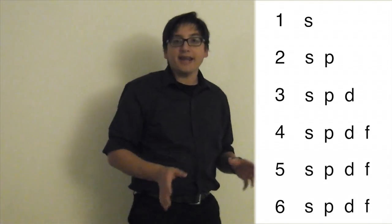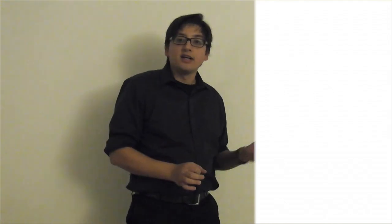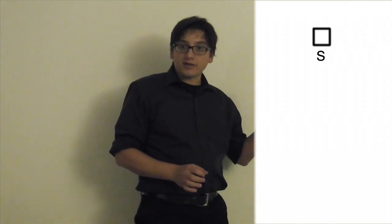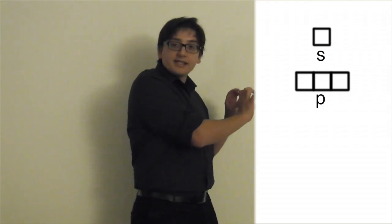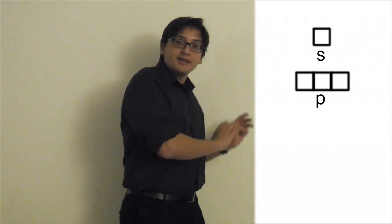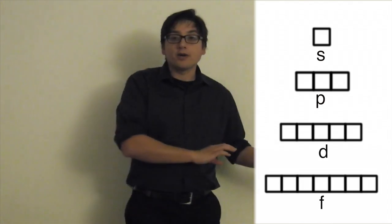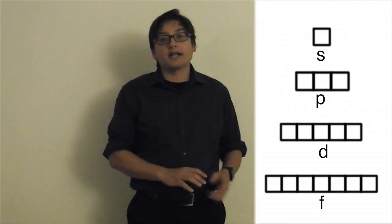So in fact, S orbitals have one slot for two electrons. P orbitals have three slots, so it's a total of six electrons, because each slot, each suborbital, each of these can hold two electrons. D is now we're up to five slots. And then F, now we're up to seven slots, so a total of 14 electrons. 1, 3, 5, 7.